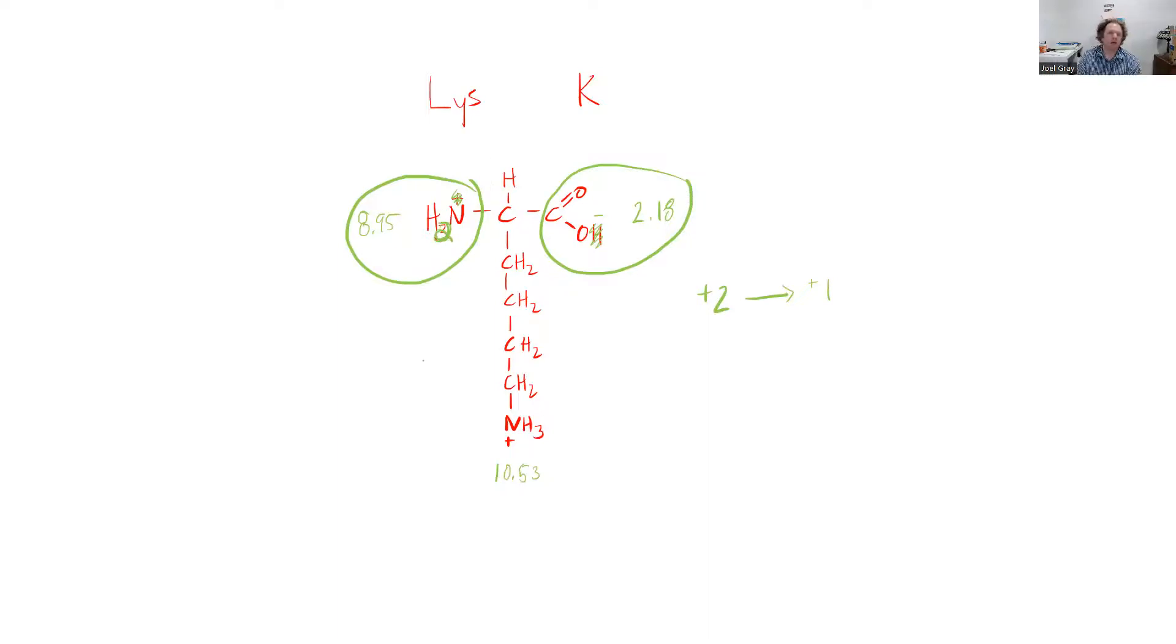So whenever that positive charge is gone, that group has gone from positive charge to no charge whatsoever. So then you're left with 0, negative, and you still have that positive charge. So that ultimately has a charge of 0.